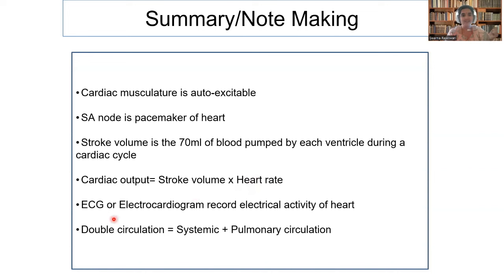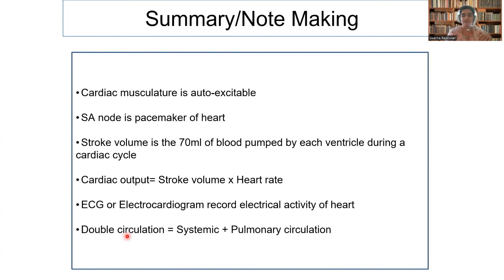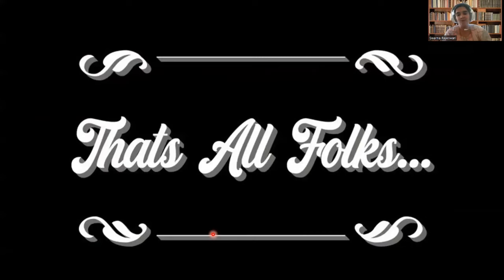ECG — electrocardiogram — records the electrical activity of the heart during the different phases of the cardiac cycle. Double circulation is systemic plus pulmonary circulation. This is the entire topic about body fluids and circulation, completed according to our NCERT syllabus.